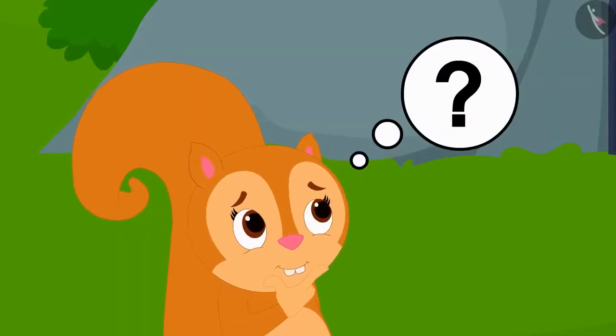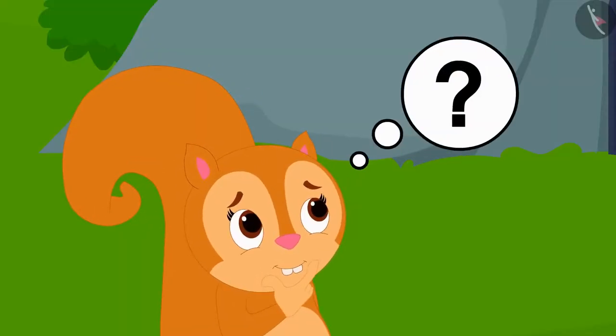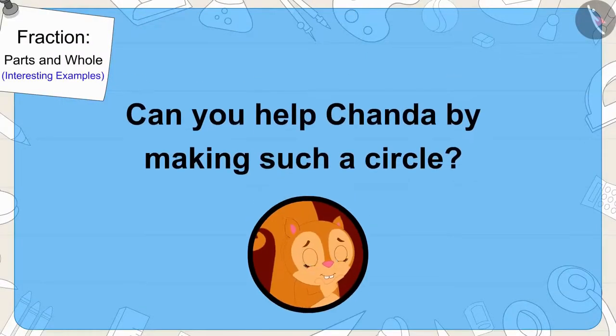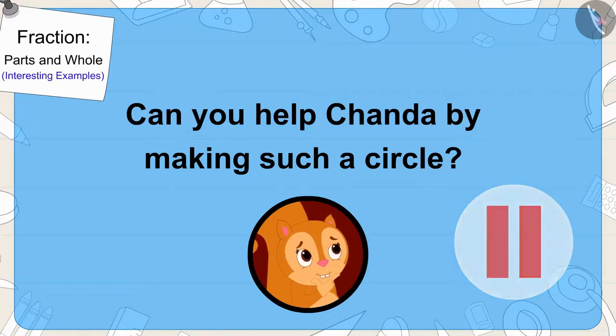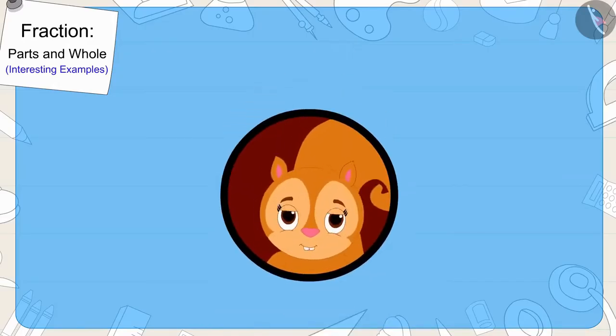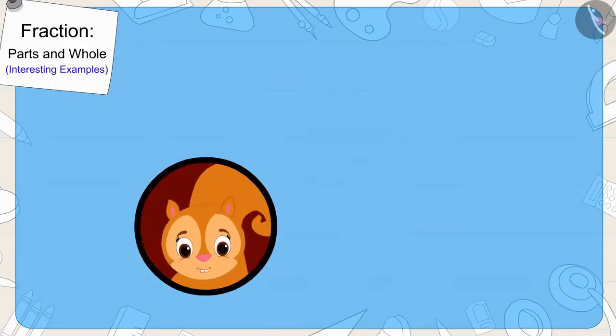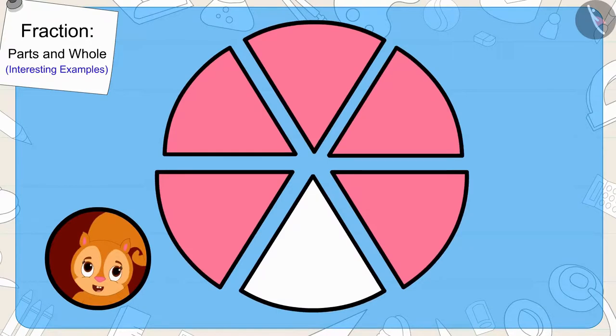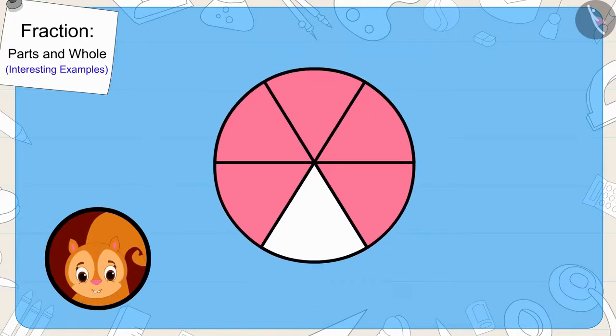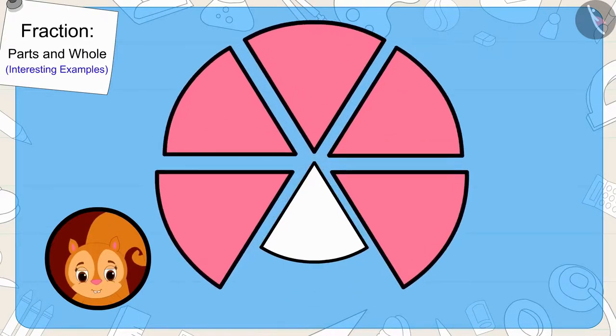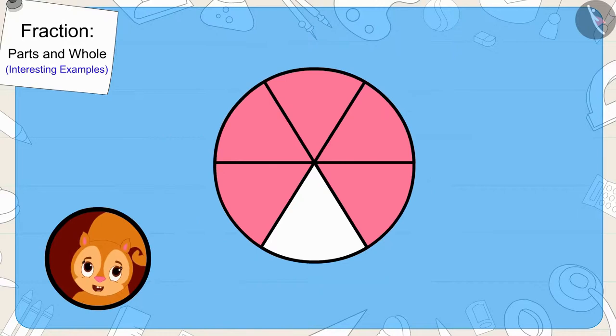Chanda does not know what this circle will look like. Can you help Chanda by making such a circle? You can find the answer by stopping the video. Well done, children. You have made it perfectly. There are six equal parts here and five of them are pink. We can write it as a fraction in this way.